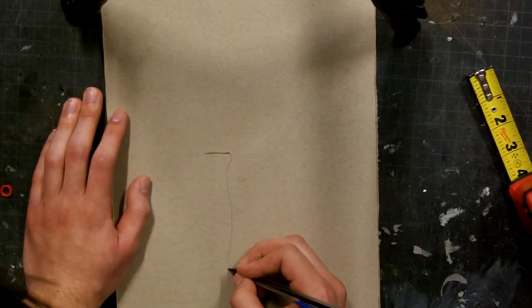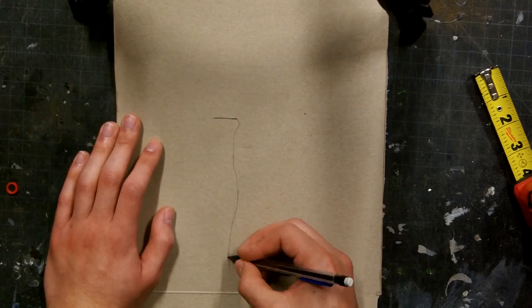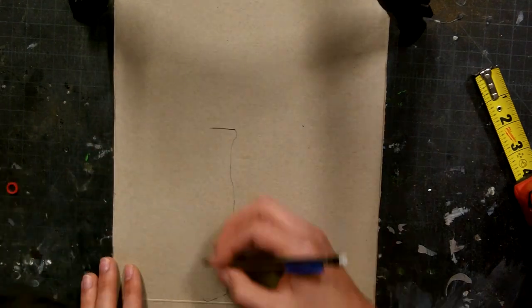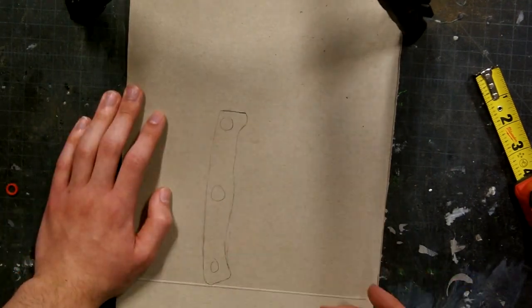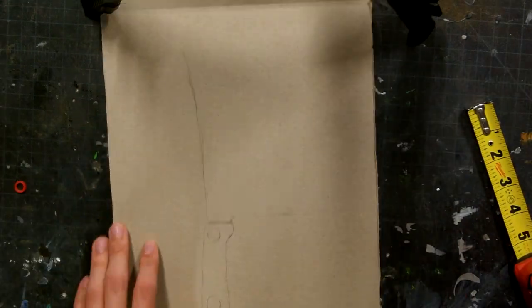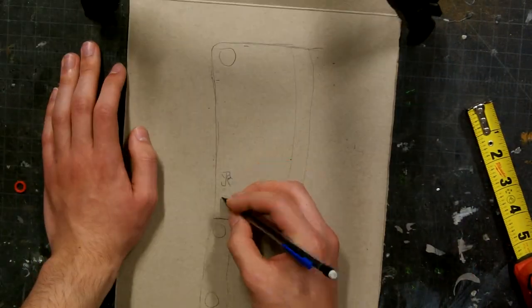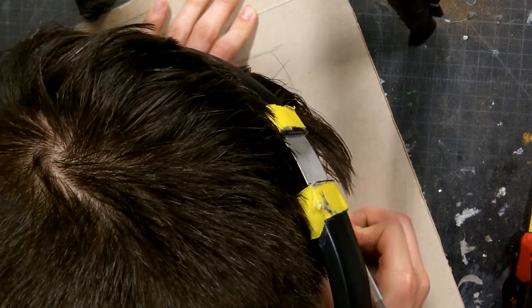First I started out by drawing the shape of a flying guillotine onto some cardboard using a pencil just so I could erase any mistakes. I cut it out with an X-Acto knife.